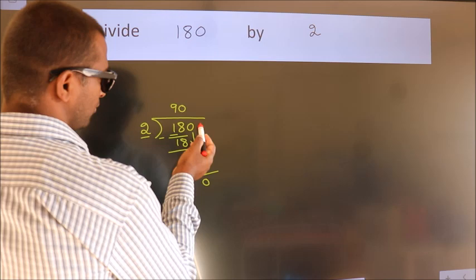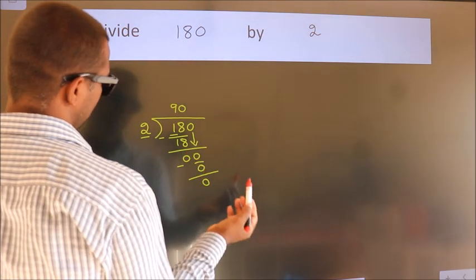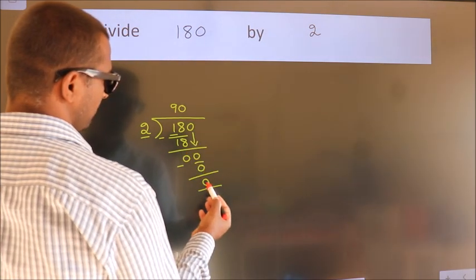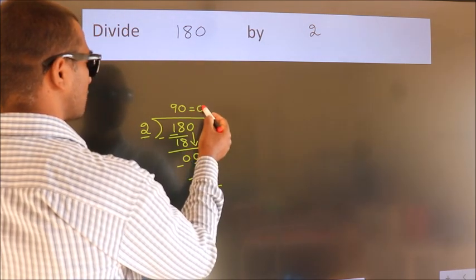After this, no more numbers to bring down. And we got remainder 0. So this is our quotient.